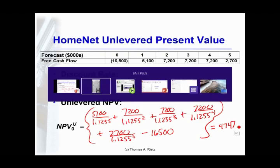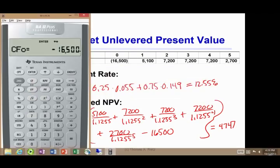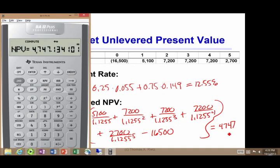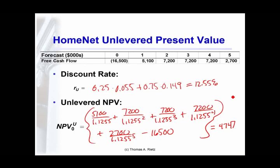To do that in the calculator, the cash flows are already entered from the previous work. All that really changes is the new discount rate: 12.55%. The new net present value is $4,747. That's the value of the project as if there were no tax shelter, or as if it were entirely equity financed.